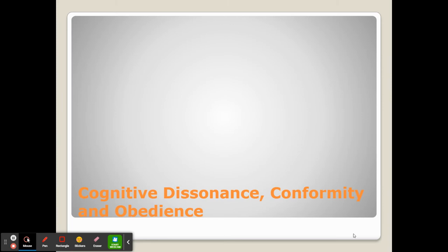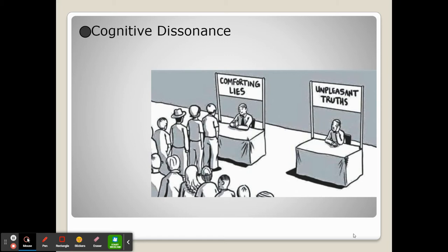We saw in the videos about the researchers looking at various ways that being in social situations can affect your behavior, and the first one that we're going to start with is cognitive dissonance. Cognitive dissonance is when our behavior and our beliefs don't align.